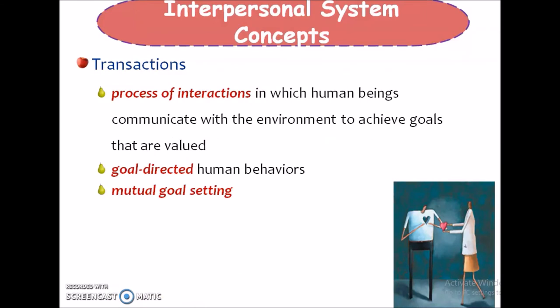Next is transaction. Transaction is the process of interaction in which human beings communicate with the environment to achieve a goal or value. These interactions are goal-directed human behaviors and mutual goal setting occurs in transaction. When two persons are interacting with one another, there will be mutual goal setting — that is called transaction. In the transaction phase, the mutual goal setting is attained.